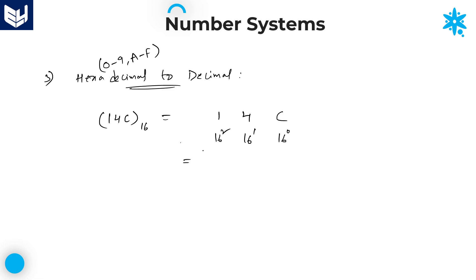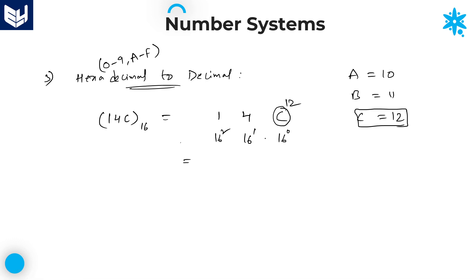Now write down the values. What is the value of C? As we all know, in hexadecimal: A equals 10, B equals 11, C equals 12. So we write 12 here. The expression is: 16 squared into 1, plus 16 power 1 into 4, plus 16 power 0 into C (which is 12).